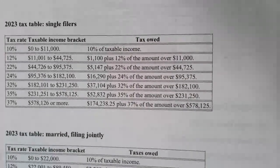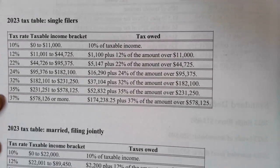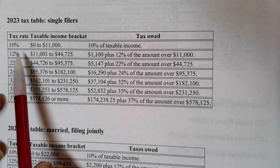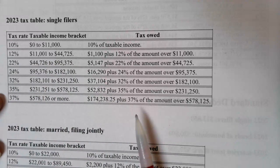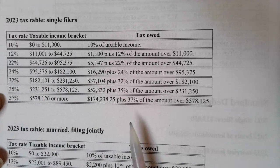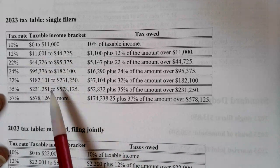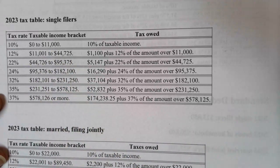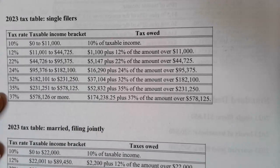Here's an example of a tax table from 2023 for single filers. Every year, the tax rates, income brackets, and tax owed is voted on and approved by the House of Representatives and adjusted for inflation and other political factors. These are the numbers that were voted on for the 2023 tax year. The taxable income brackets and amount owed depend on your filing status, so there's a separate table for each different type of filing status.